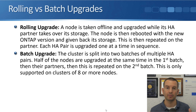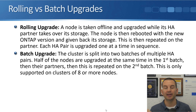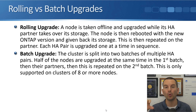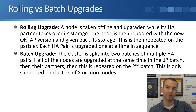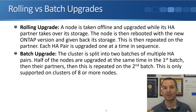The other way to do it is the batch upgrade. With a batch upgrade the cluster is split into two batches of multiple HA pairs. Half of the nodes are upgraded at the same time in the first batch, and then their partners, and then that is repeated on the second batch. So it's actually split into four parts: two batches, and each batch is done in two halves. The batch upgrade is only supported on clusters of eight or more nodes, but when you do have eight or more nodes it means that the upgrade is going to be completed more quickly than if you were doing a rolling upgrade.